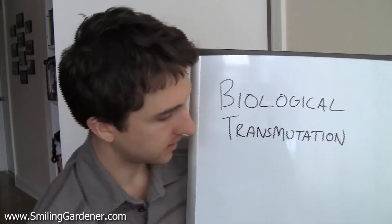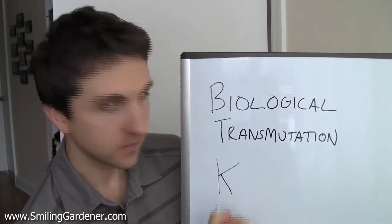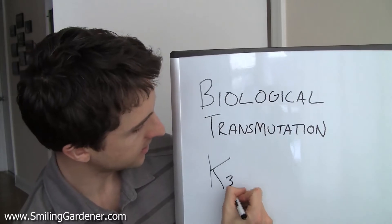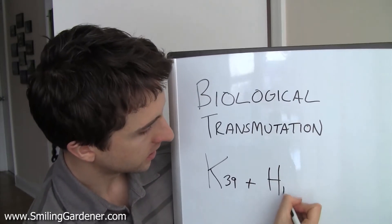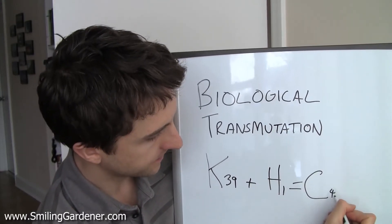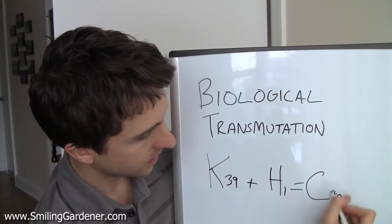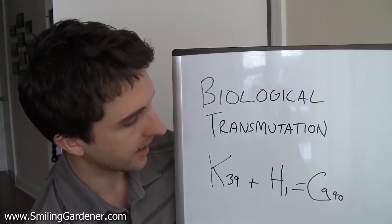So an example was potassium. See that? Potassium. I think it's this. And hydrogen combined together to make calcium, because calcium is Ca.